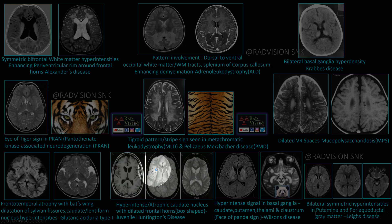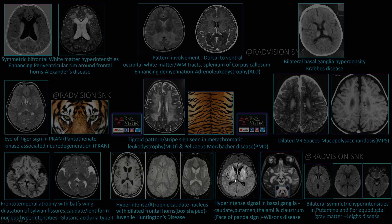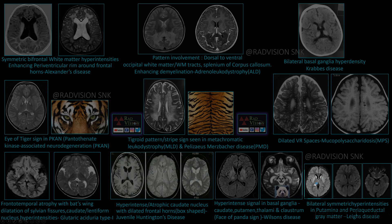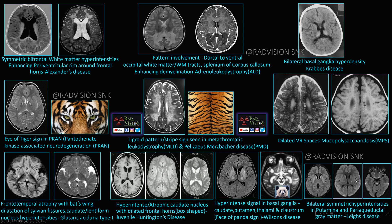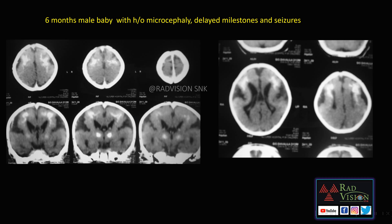Hyperintense caudate nuclei with atrophy and box-shaped frontal horns — classical for Huntington's disease. Hyperintense signal in the basal ganglia of caudate and putamen with classical face of the giant panda sign — classical for Wilson's disease. Bilateral symmetrical hyperintensities in putamen and periaqueductal gray matter — classical for Leigh's disease. So this one slide sums up all the common white matter disorders in pediatric age group.